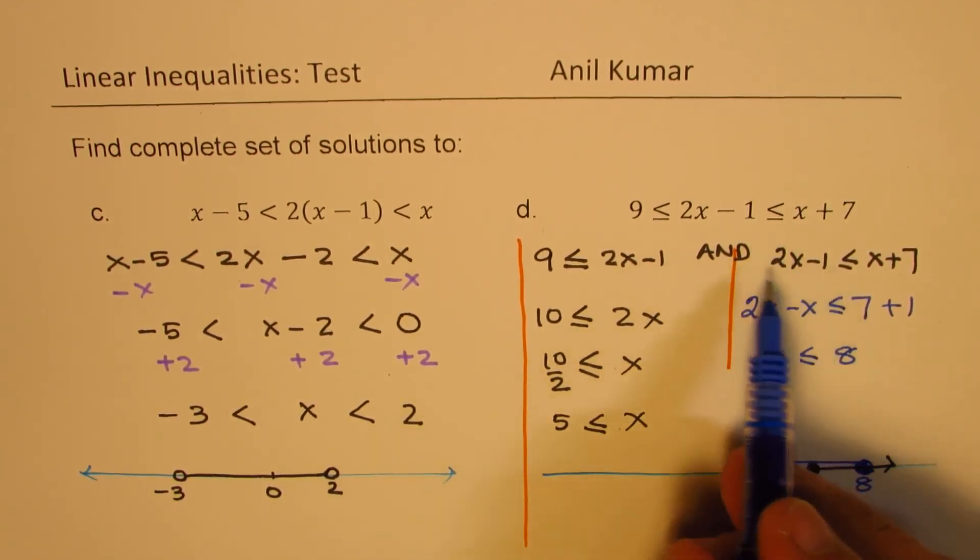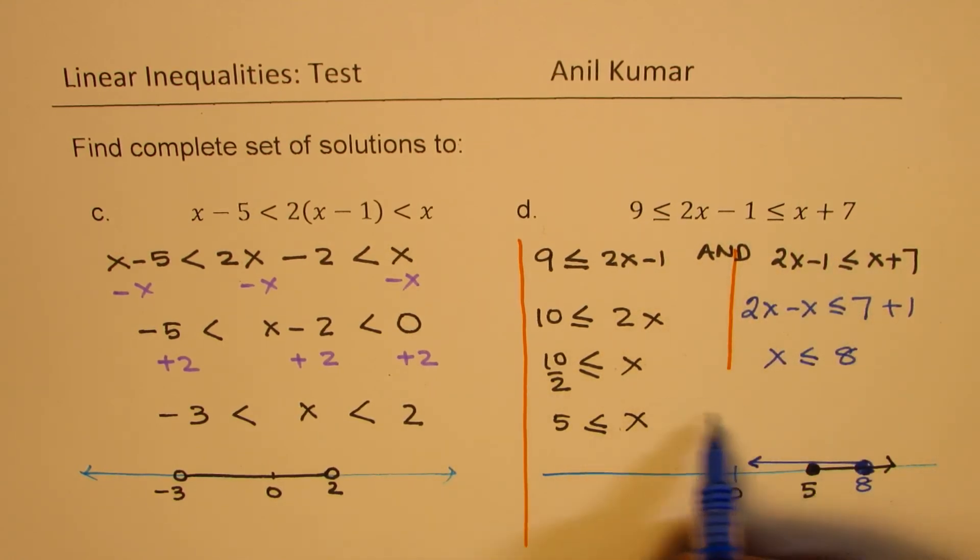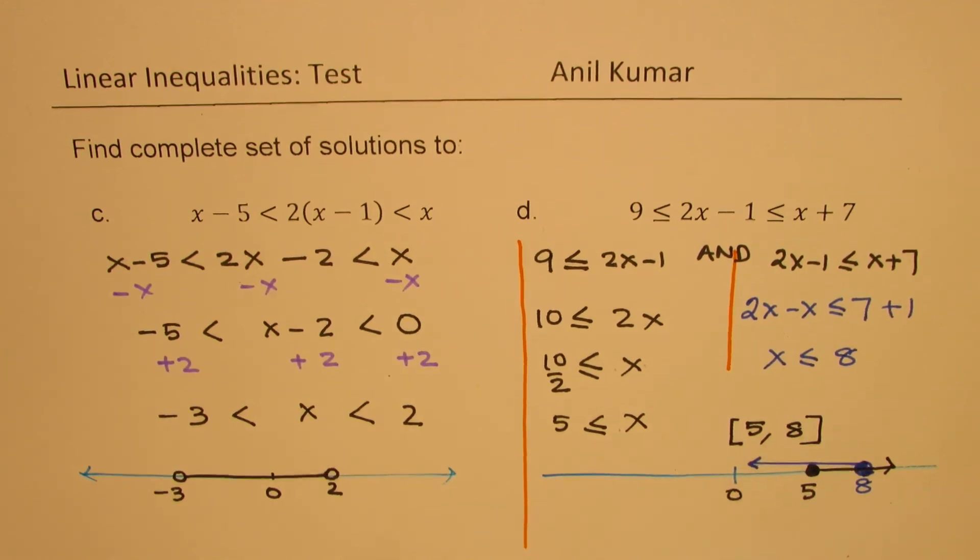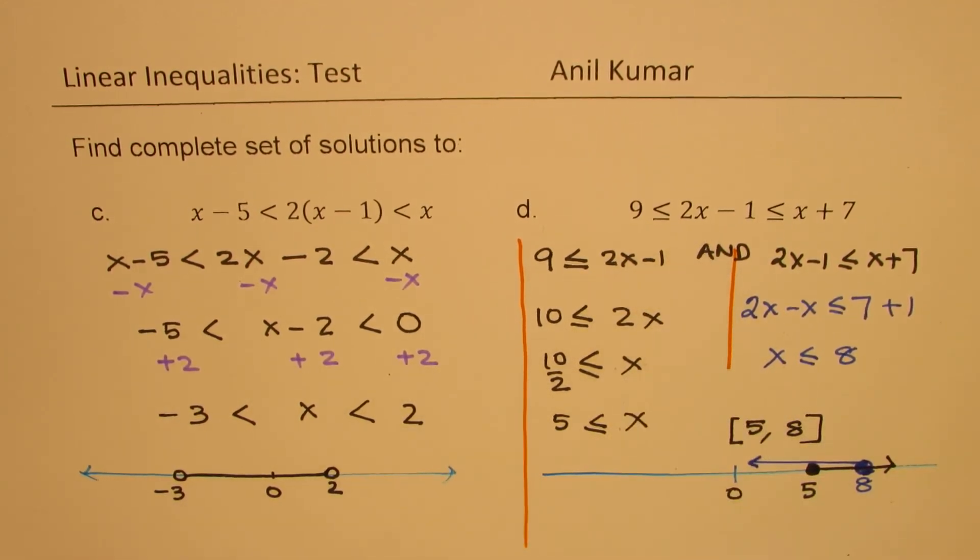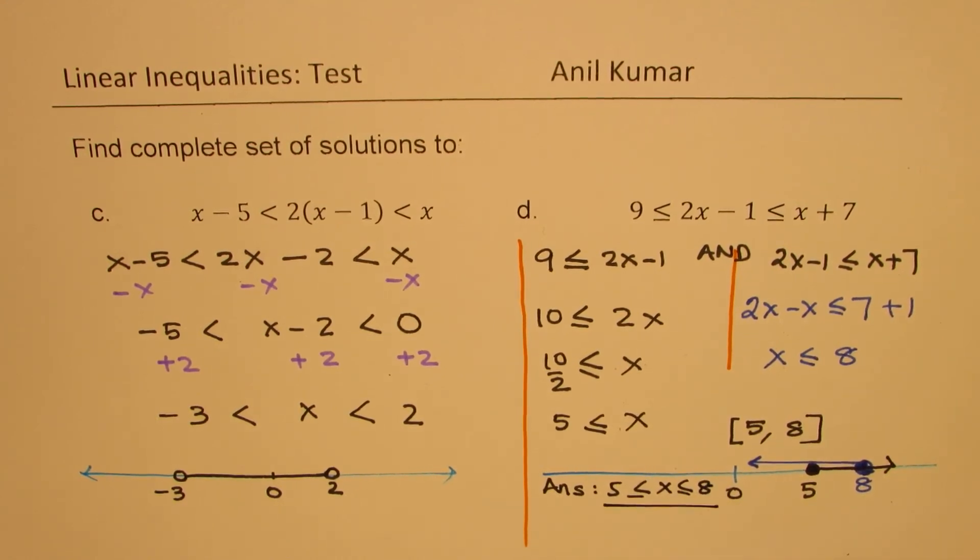So the operation here is intersection. So we are talking about and. So both should be true. So both can only be true if we are talking about a solution which is between 5 and 8. So that becomes your answer. So that is how we are going to solve this. So everything between 5 and 8 will be the solution of the given question. So our answer here is that x is greater than equal to 5 and less than equal to 8. Perfect.